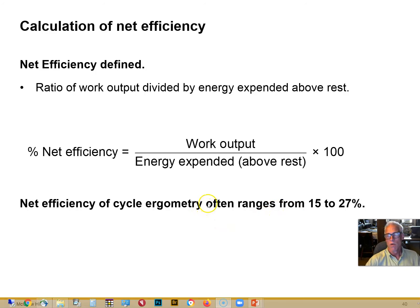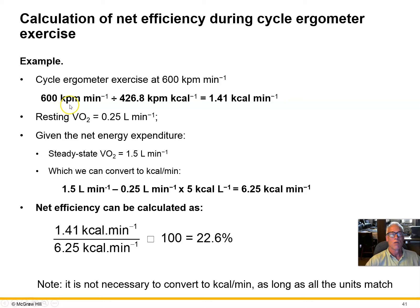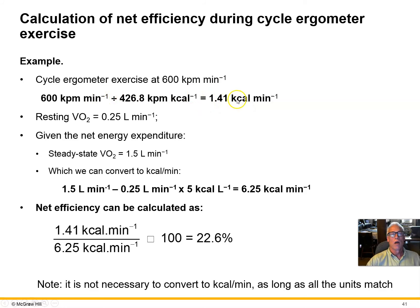The net efficiency of cycle ergometry runs in the range of 15 to 27%. That may seem low, but it's actually a very good efficiency rate for any kind of machine in terms of converting the energy the body expends into external work. Here's an example calculation: the exercise is set at 600 kilogram-meters per minute of external work, which we can convert to 1.41 kilocalories per minute.